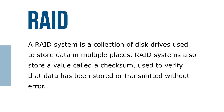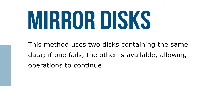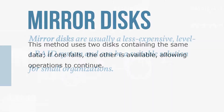A redundant array of independent disks, known as a RAID system, is a collection of disk drives used to store data in multiple places. RAID systems also store a value called a checksum, used to verify that data has been stored or transmitted without error. Mirror disks is a method where two disks containing the same data are used; if one fails, the other is available, allowing operations to continue. Mirror disks are generally a less expensive solution.